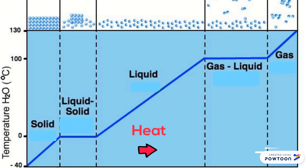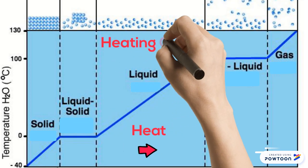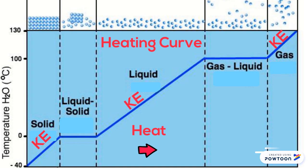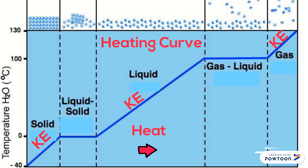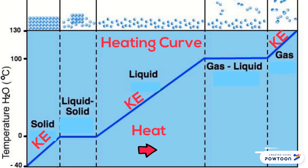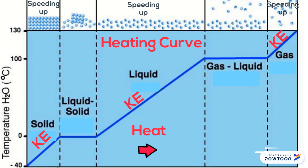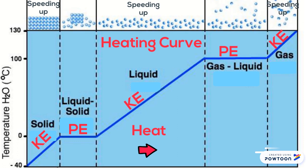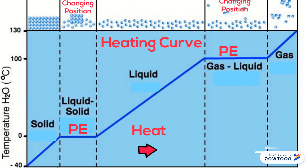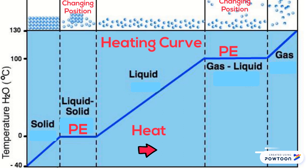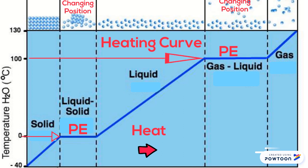This diagram is called a heating curve. Every time the graph goes up, you have kinetic energy — the temperature goes up and the particles speed up. Whenever you have a flat part of the graph, you're storing up potential energy as the particles change position. The temperature will remain the same whenever this is happening.